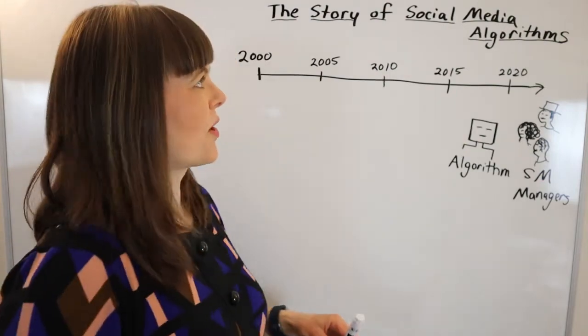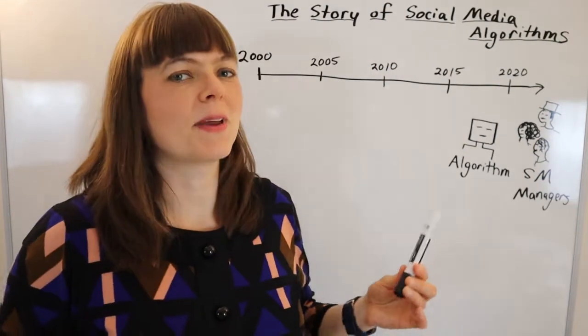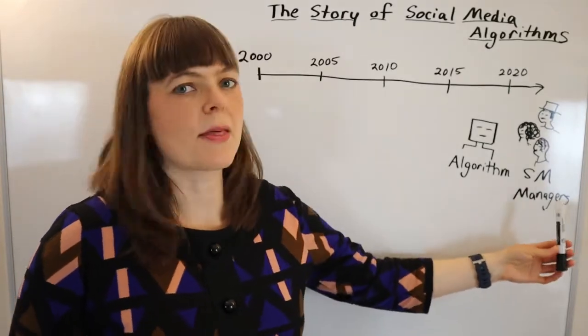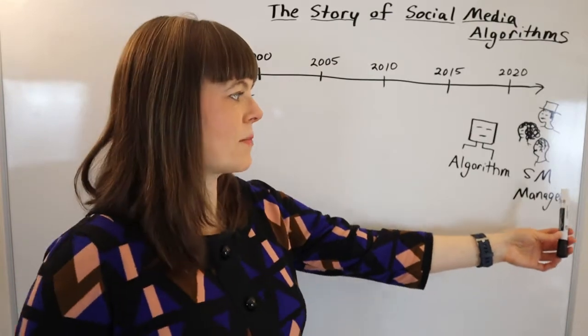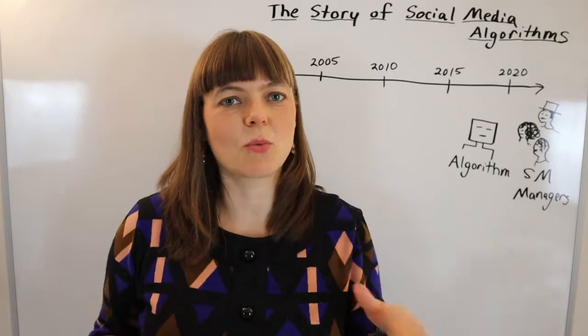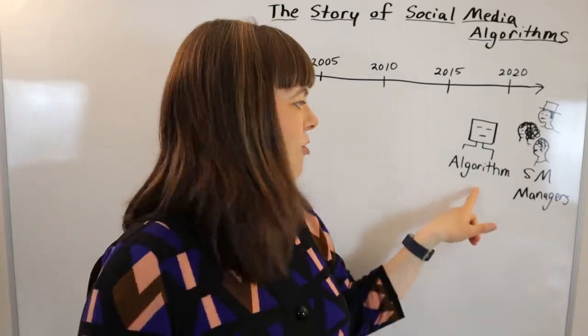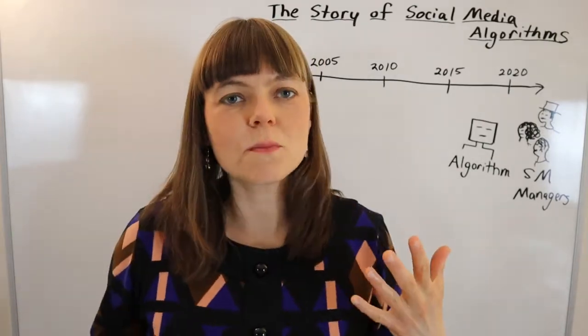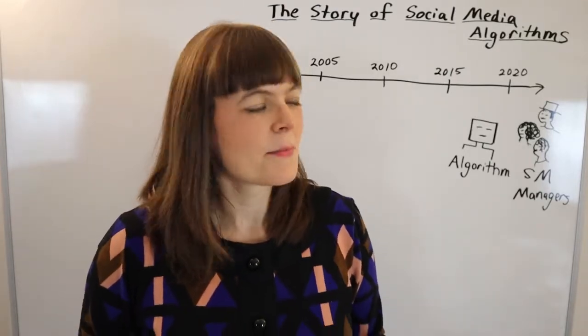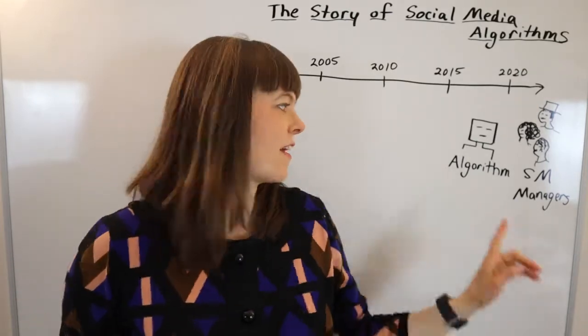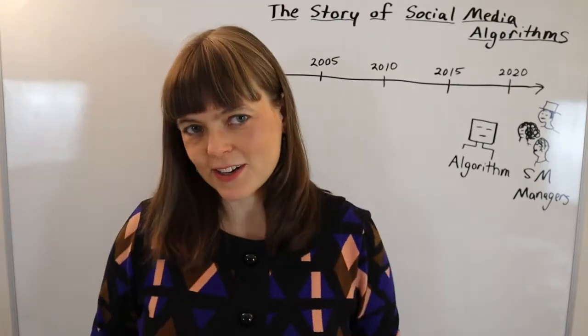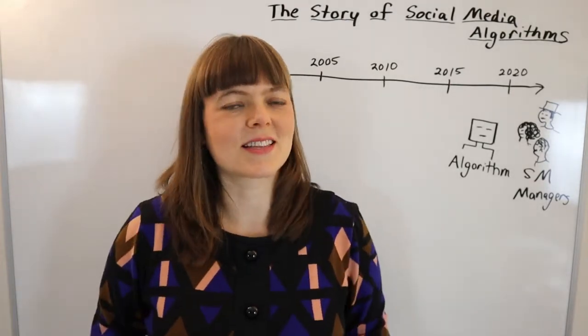My plan today is to tell you a story about the history of social media algorithms. This is going to be the history of the relationship between the managers of the social media companies and the algorithms. I'm going to tell it like an economist where every point in the story where the algorithms can't achieve their goal is going to relate to some version of diminishing marginal benefit.